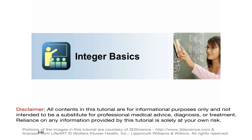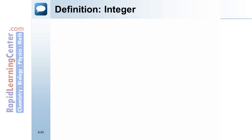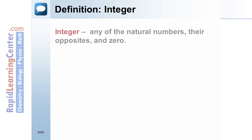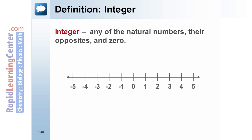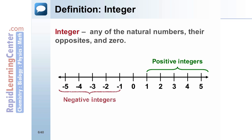The first section will discuss basic information of integers. An integer is any of the natural numbers, their opposites, and zero. The natural numbers represent the positive integers, their opposites are negative integers, and zero has no sign.